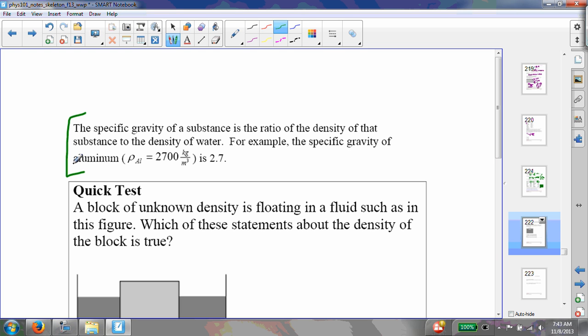For example, since the density of aluminum is 2700 kilograms per cubic meter, the specific gravity of aluminum is going to be 2700 divided by a thousand, that's the density of water, both in kilograms per cubic meter.